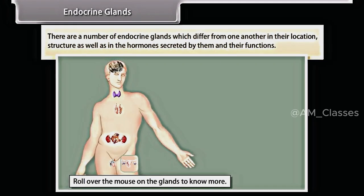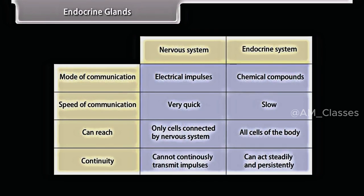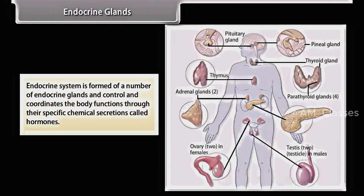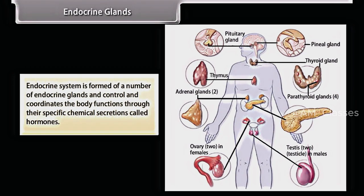There are a number of endocrine glands which differ from one another in their location, structure, as well as in the hormones secreted by them and their functions. The endocrine system is formed of a number of endocrine glands and controls and coordinates the body functions through their specific chemical secretions called hormones.